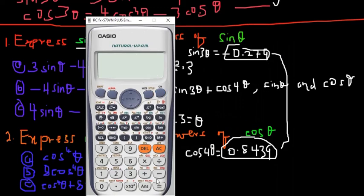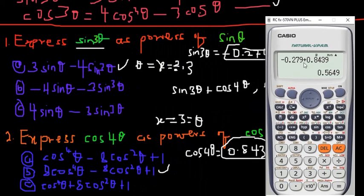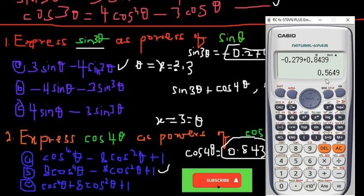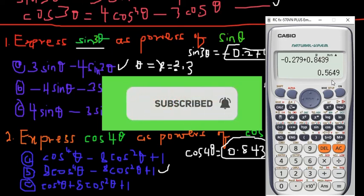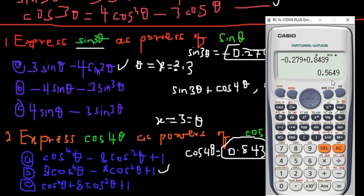For example: (−0.279) + (0.8439). The result of this sum becomes the target value you compare against each answer option. Whichever option gives you that value when you substitute is your answer. That's how you learn smart, not hard. I hope you enjoyed this video. Kindly subscribe, hit the bell icon, like and share the video, and leave any questions or suggestions in the comments below. See you in the next video!